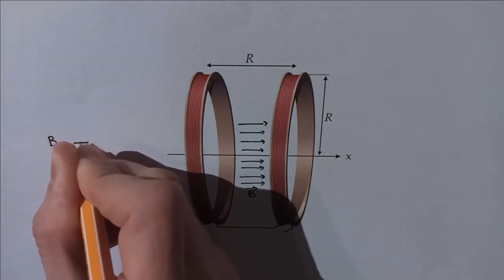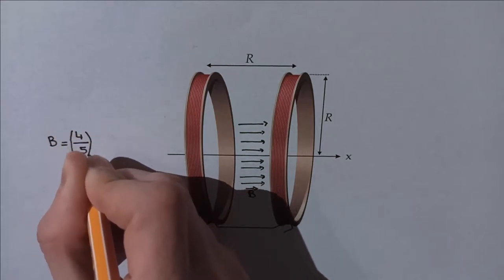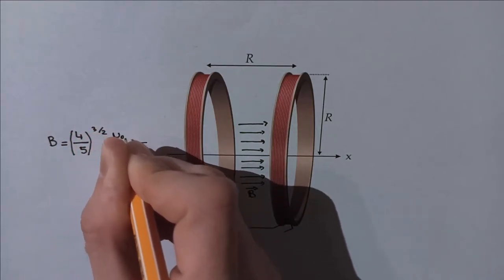If we make three orthogonal pairs of Helmholtz coils, we get a 3D field that we have full control on.